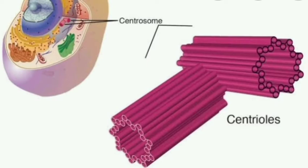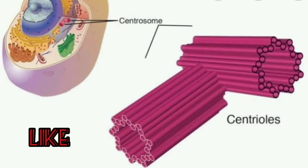Centrioles are absent in the cells of higher plants. Lower plants, microorganisms, and animal cells contain centrioles, and all these cells have two centrioles each. Animal cells have two centrioles located near the exterior surface of the nucleus. The two centrioles are collectively called a centrosome.